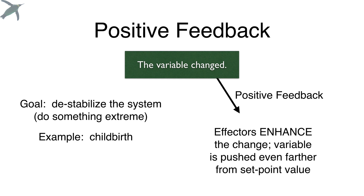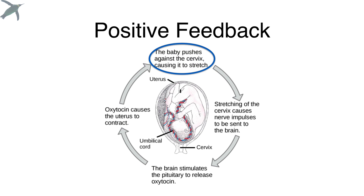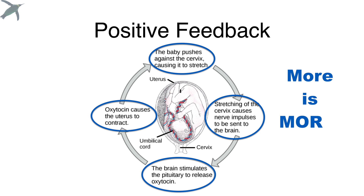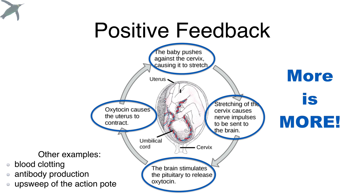Positive feedback loops destabilize the system and are used when we need to do something extreme. For example, childbirth: the baby pushes against the cervix causing it to stretch, which sends nerve impulses to the brain, causing the pituitary to release oxytocin, which causes the uterus to contract, increasing the baby pushing against the cervix. More is more — the more you have, the more you get. Other examples include blood clotting, the immune response, and the upsweep of the action potential — all really big and dramatic things.